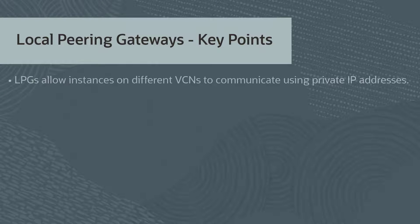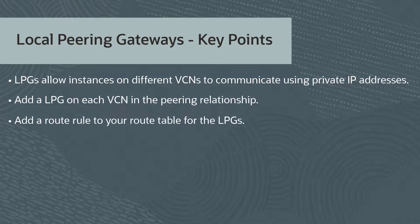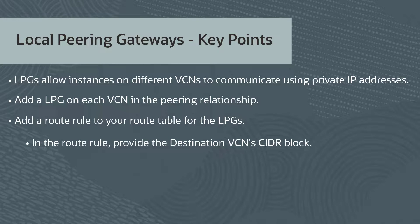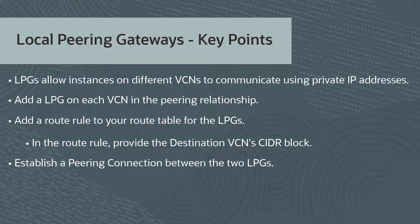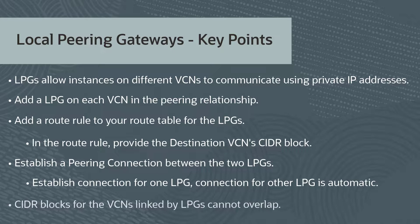To summarize: Local Peering Gateways allow instances on different VCNs to communicate using private IP addresses without routing the traffic over the internet or through your on-premise network. You need to add a Local Peering Gateway on each VCN in the peering relationship, and add a route rule to your route table for each Local Peering Gateway — providing the destination VCN's CIDR block in the route rule. You have to establish a peering connection between the two gateways, but you only need to do this from one side; the connection is automatically established for the other gateway. One additional point: the CIDR blocks for the VCNs linked by the Local Peering Gateways cannot overlap.